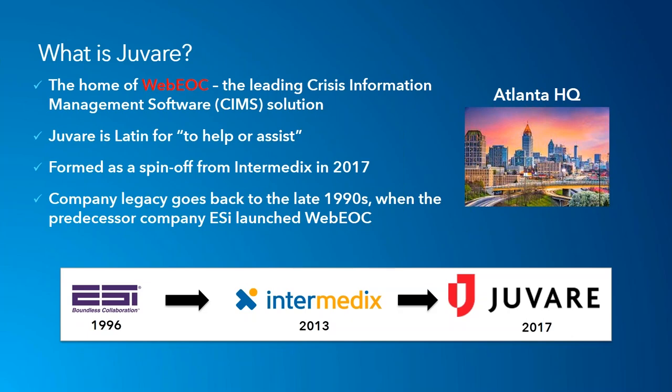Those assets were formed into a division that in 2017 was spun out to form Juvari. Juvari is Latin for 'to help' or 'to assist,' and that captures our ethos. Everything we do is organized around the domain of emergency management and the domain of preparedness.